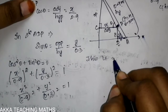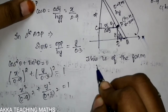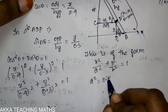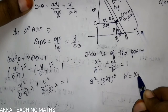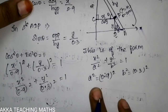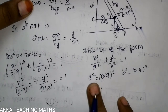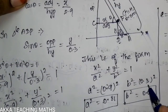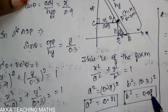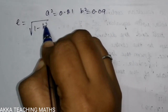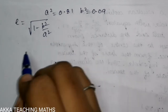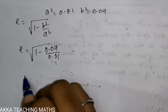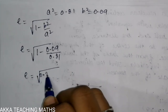Here, a² equals 0.81 (which is 0.9 squared) and b² equals 0.09 (which is 0.3 squared). The eccentricity is e = √(1 − b²/a²) = √(1 − 0.09/0.81) = √(0.72/0.81).